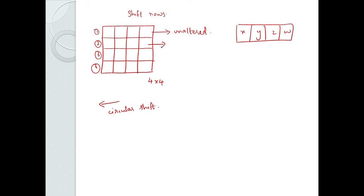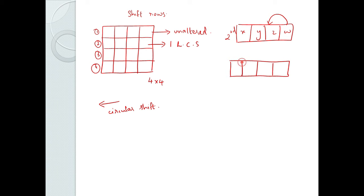The second row undergoes a 1-byte left circular shift. So if the second row has values X, Y, Z, W, after a 1-byte left circular shift, the result is Y, Z, W, X — the first element wraps around to the end.